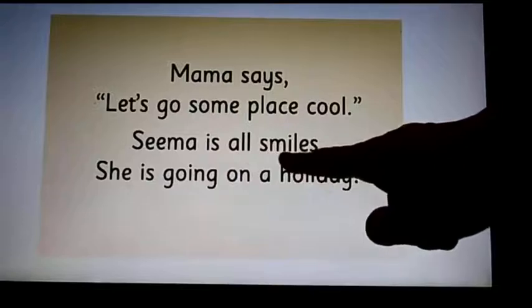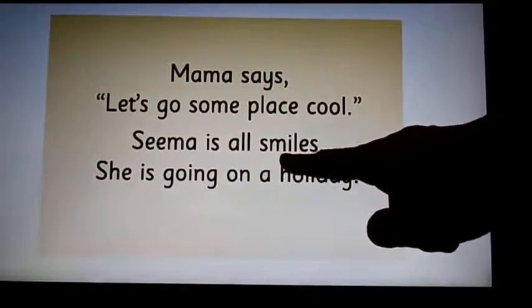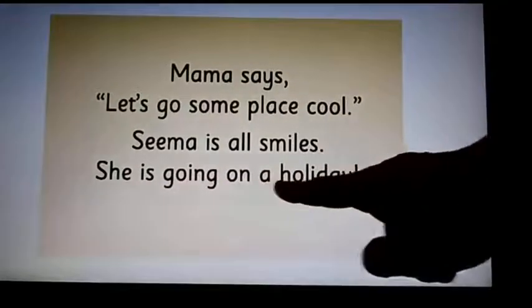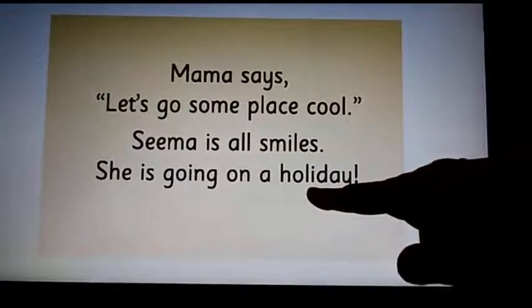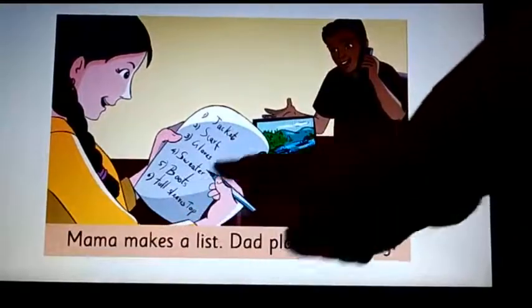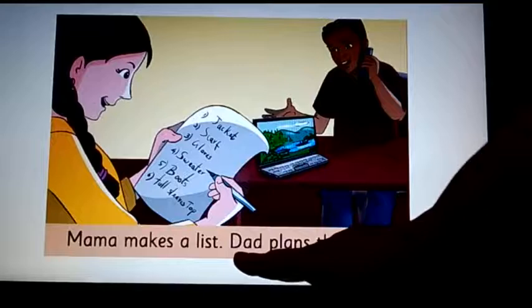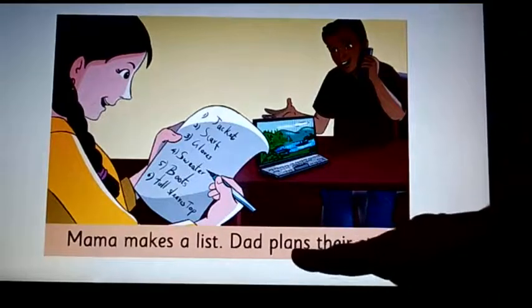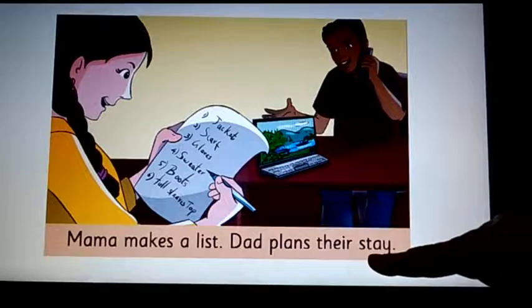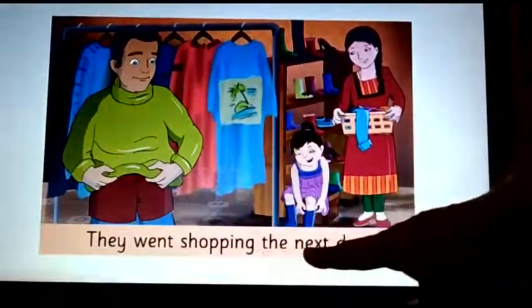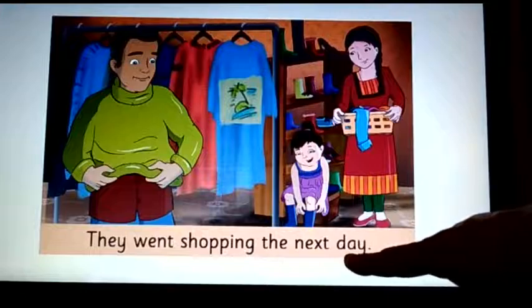Sima is all — look at Sima's face, which word is this? Smiles. She is going on a — which word is this? Holiday. Mama makes a — what is this? The word is list. Dad plans their — which word? Stay. They went shopping the next — which word? Day.